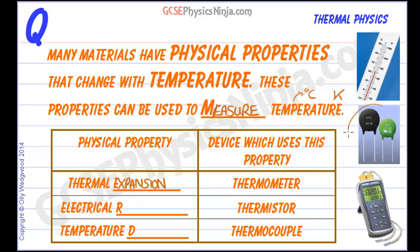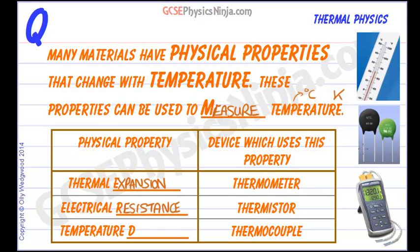A thermistor is an electronic component. As you heat it up, its electrical resistance will decrease — it gets easier for a current to flow through the thermistor. If you can measure that current, then you have a way of measuring temperature. The physical property is called electrical resistance: how difficult or easy it is for an electrical current to flow through it.